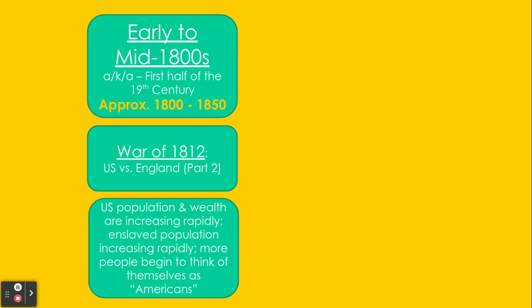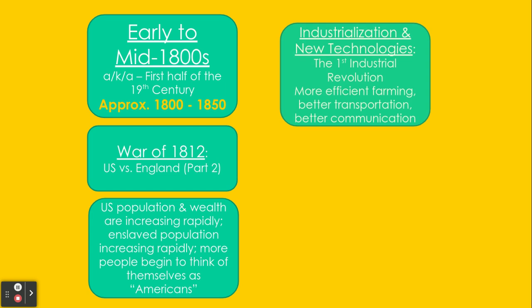We already talked about the War of 1812. Industrialization and new technologies — this is the part we're going to be focusing on today, the first Industrial Revolution. It's going to bring about more efficient farming. Farming and industrialization might not seem like they go together, but they do. Just stay tuned. Better transportation and communication as well.